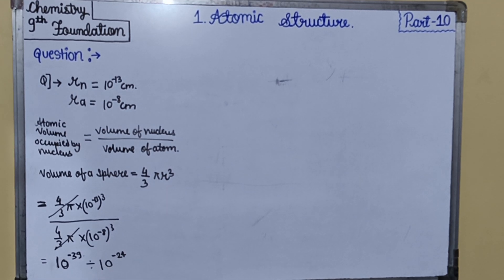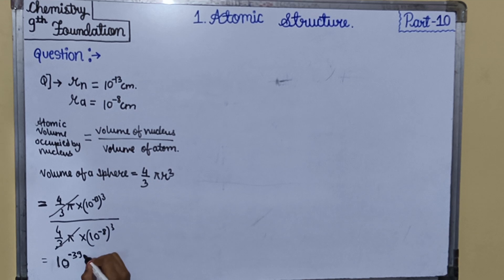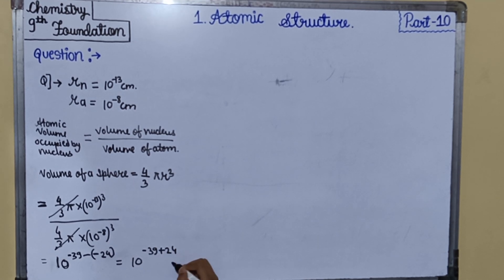When base is same and it is in division, we will subtract the powers. So 10 raised to minus 39 minus minus 24. We will get 10 raised to minus 39 plus 24, and the final answer will be 10 raised to minus 15.